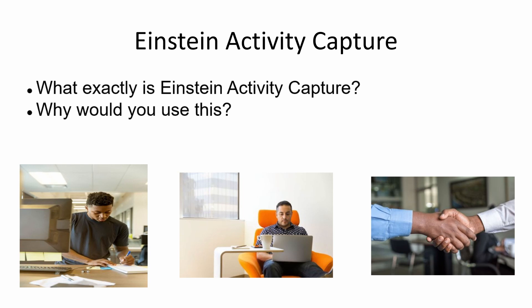A quick example: you have a salesman in the middle of a big deal. It's a long sales cycle, it's in the pipeline, and then the salesman leaves for another opportunity. Now, instead of that opportunity being lost in the shuffle, all the information is in one spot — easily transferable to the next salesman so the deal doesn't get lost. Instead of starting at point A, they're starting at point N, and the sales cycle doesn't have to restart from scratch.